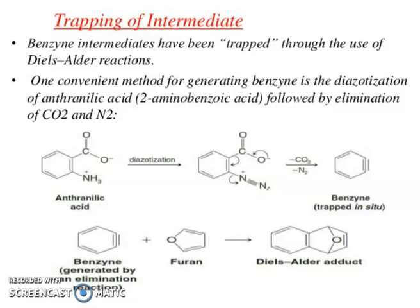One convenient method for generating benzyne is the diazotization of anthranilic acid (2-aminobenzoic acid), followed by elimination of CO₂. Anthranilic acid undergoes diazotization to form the intermediate, which then loses carbon dioxide to generate benzyne.